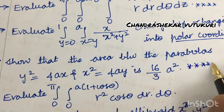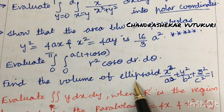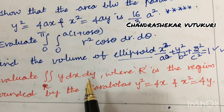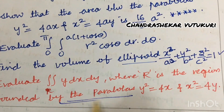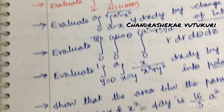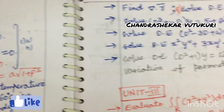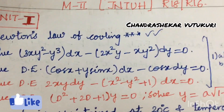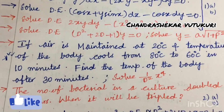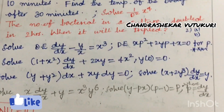The area between parabolas is also asked several times and is a gunshot question. Evaluate the double integral ∬ r² cosθ dr dθ. Find the volume of an ellipsoid — also very important. Evaluate the double integral ∬_R y dx dy where R is the region bounded by parabolas — also very important. This video covers units 1, 2, and 3; the other uploaded video covers units 4 and 5.